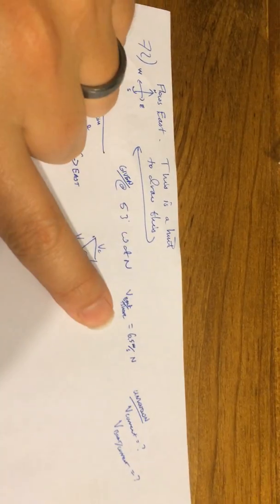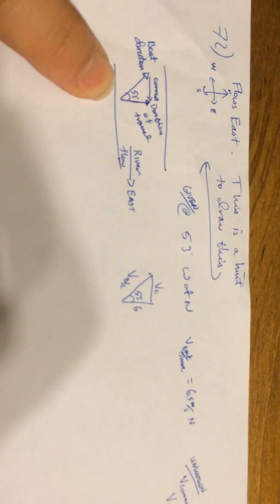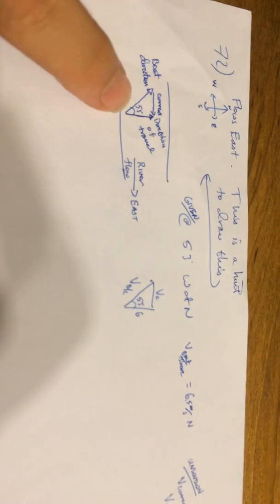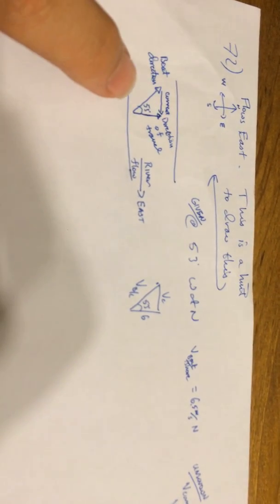So we're given this information and need to find the velocity of the current. Alright, so here's the drawing. We know this velocity relative to the shore, 6.5 meters per second.